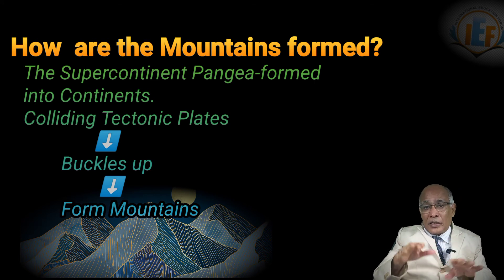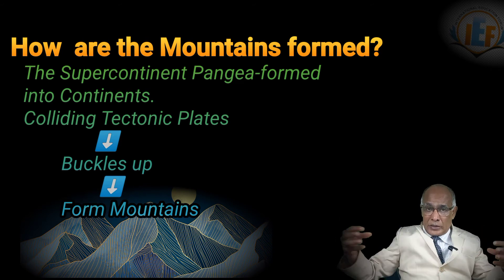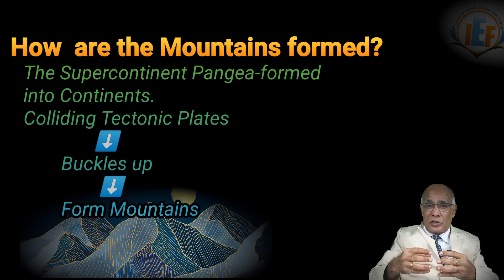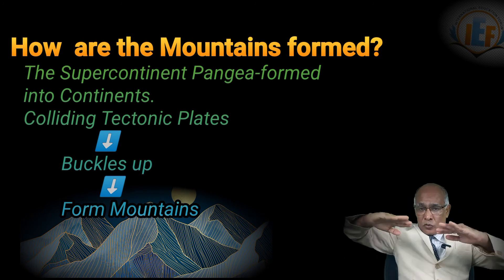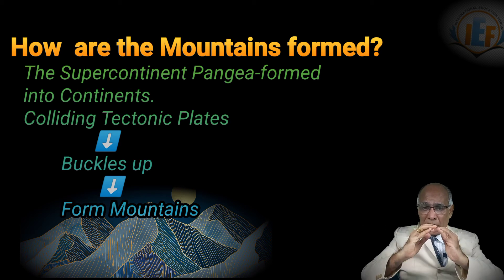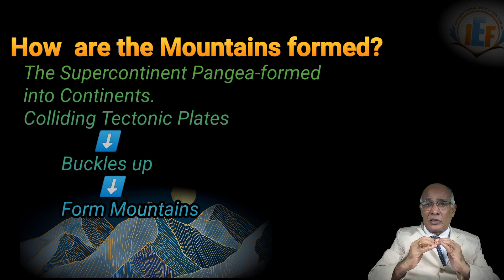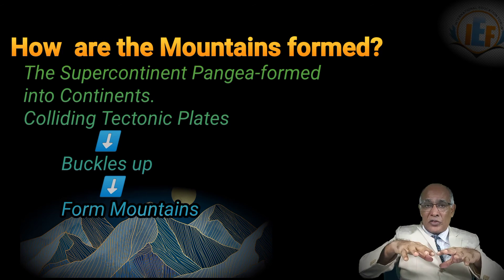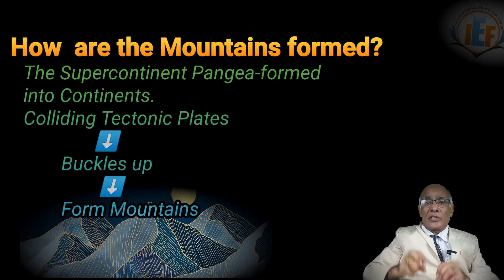When the plates started moving, sometimes what happened is the plates collided against each other — like how two cars collide at speed. Then what happens? The bonnet will come out and rise up. In the same way, the collision between these two continents, when they collided together, the surface of that place rose up like a bonnet. And in that way, the mountains are formed.